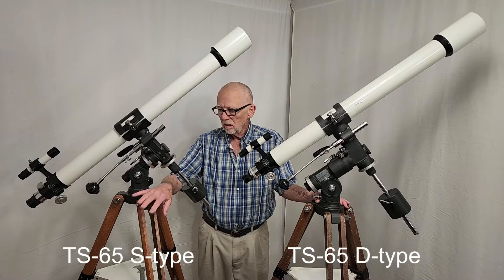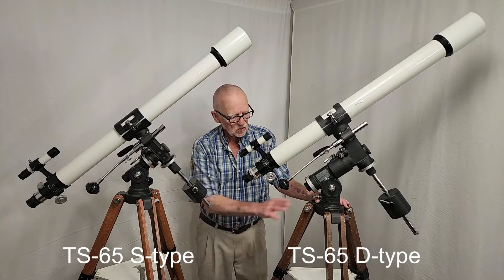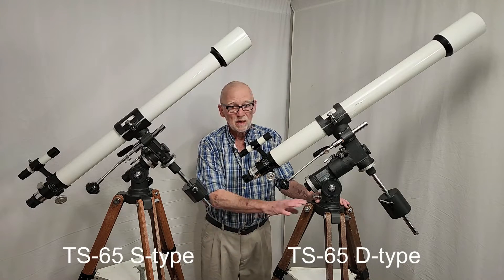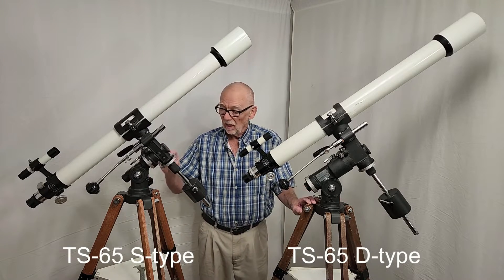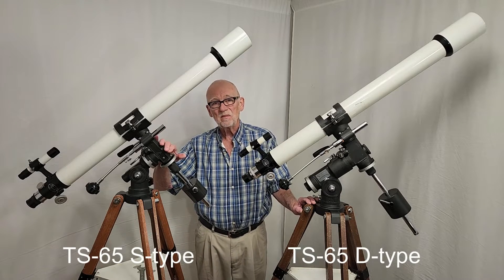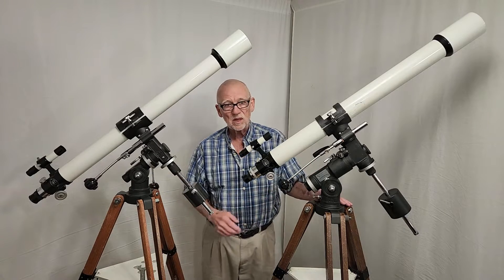The S-Type here only weighs about 25-30 pounds, something like that. This one here, the D-Type weighs 45 pounds or so. It is really big. I think this scope is big. I mean, this is a big 65 millimeter scope. So this thing, this one is a monster.